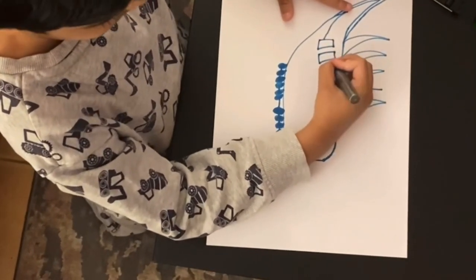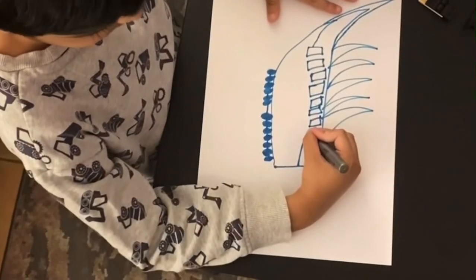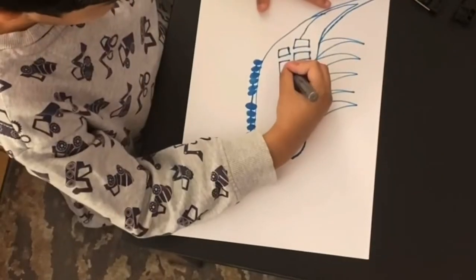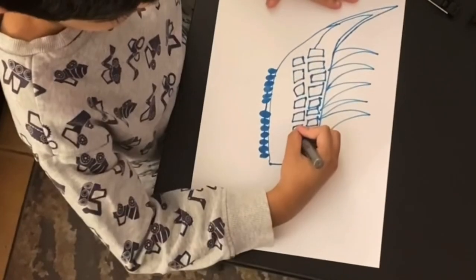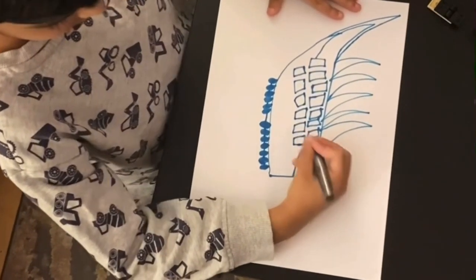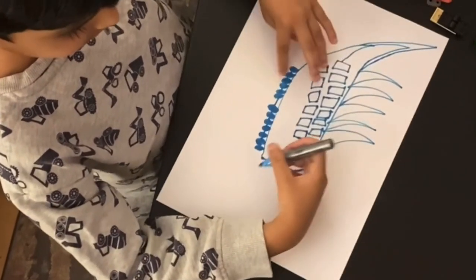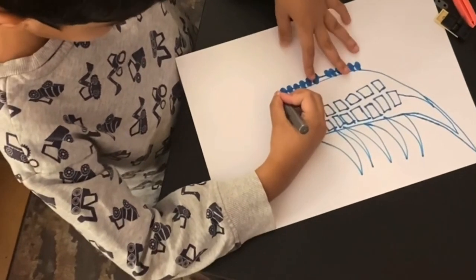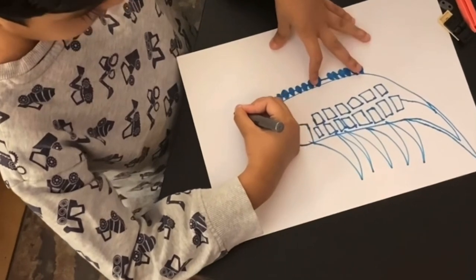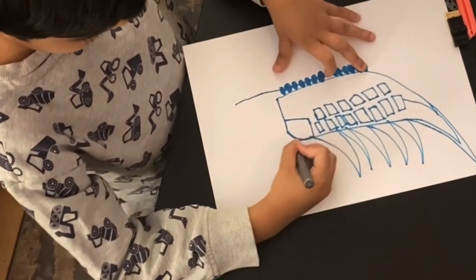He is now creating windows, as the train contains two levels of seating, so there's an upper deck and a lower deck. Now he is making the front engine part of the train.